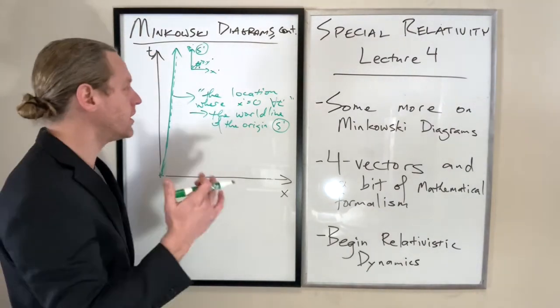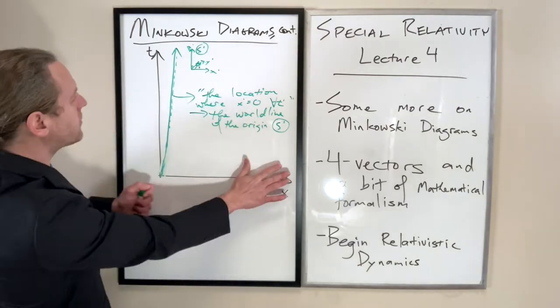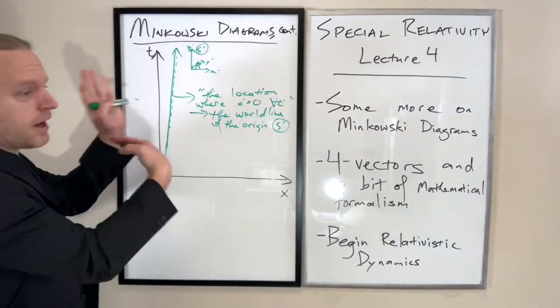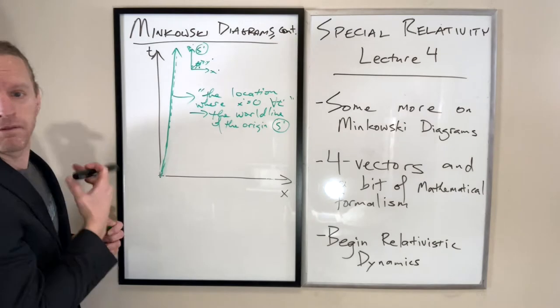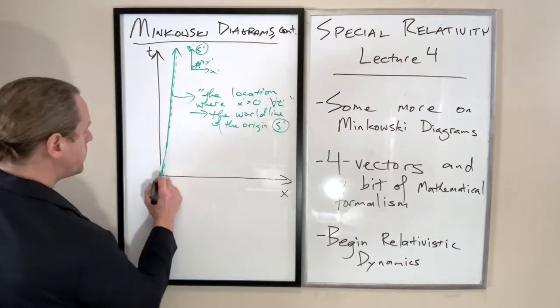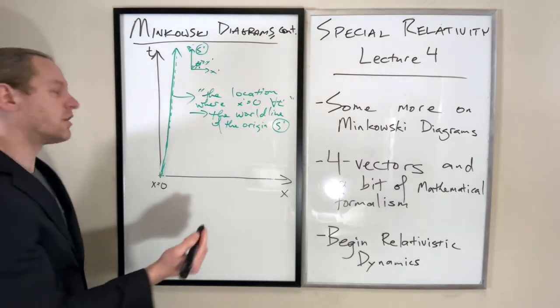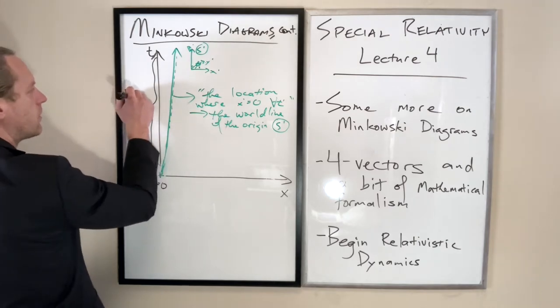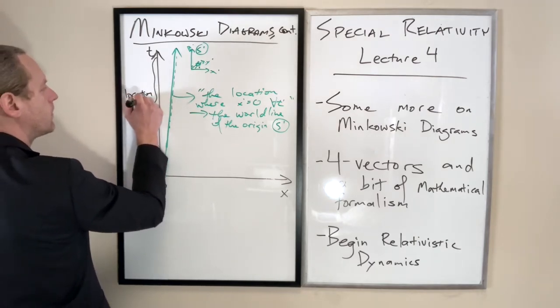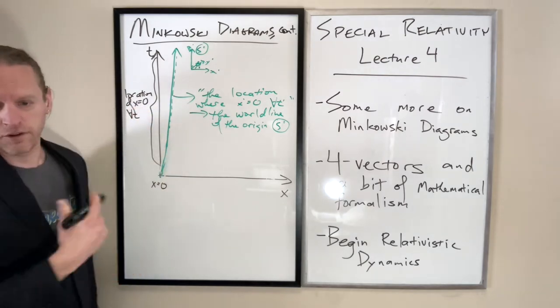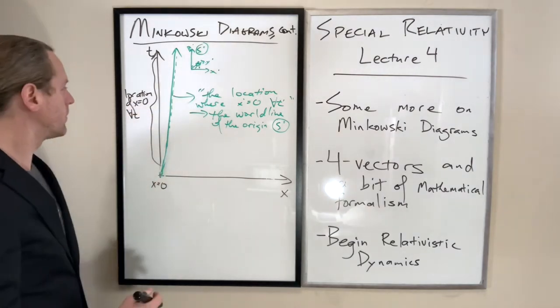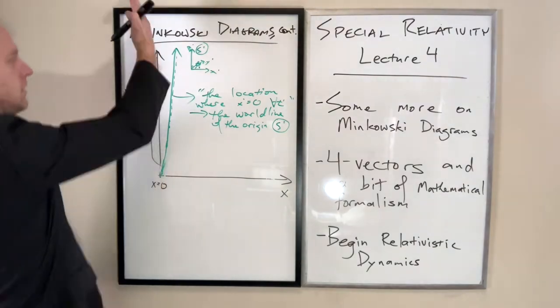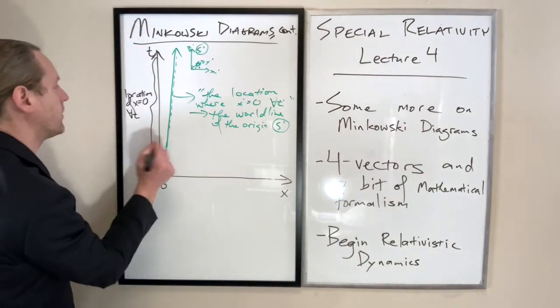If it's a location where x prime equals zero, let's compare this. In the reference frame s (black), if you take location x equals zero for all time, that's exactly what this line right here is. That's just the t-axis, or the y-axis in this case.